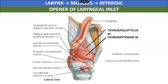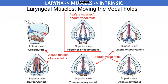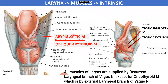To summarize: the first group — tensor cricothyroid and relaxer thyroarytenoid; the second group — abductor posterior cricoarytenoid, and adductors transverse and lateral cricoarytenoid; the third group — opener thyroepiglotticus, and closers aryepiglottic and oblique arytenoids. All muscles of the larynx are supplied by the recurrent laryngeal branch of the vagus nerve, except for the cricothyroid, which is supplied by the external laryngeal branch of the vagus nerve. The only safety muscle of the larynx is the posterior cricoarytenoid, as it causes abduction of the vocal cords required during respiration.